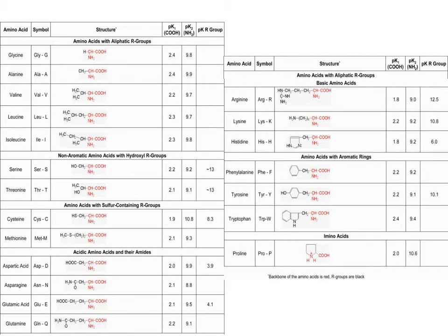There are 22 amino acids, which include selenocysteine and pyrrolysine, but for this course you will only need to know the 20 amino acids shown here. You need to know which are hydrophobic, which are polar, which are acidic, which are basic, which are hydrophobic aromatic groups, and then proline, which is a kink-inducing amino acid that we'll discuss later.